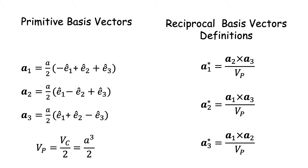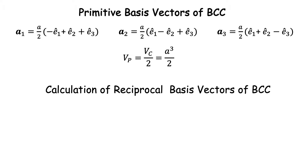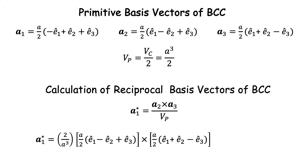Now we have all the ingredients and the formula for calculating the reciprocal basis vectors. All we need to do is substitute the expressions for a1, a2, a3 into the formula and carry out the calculation. For a1*, the factor 1/Vp = 2/a³, and we substitute the expressions for a2 and a3. Pause the video here and take a minute or two to expand and calculate the cross product to simplify a1*.